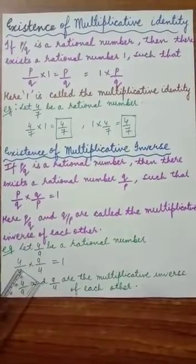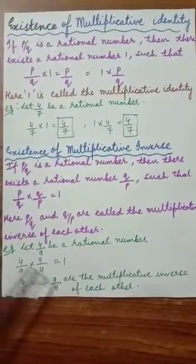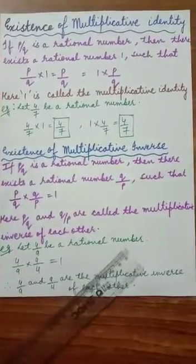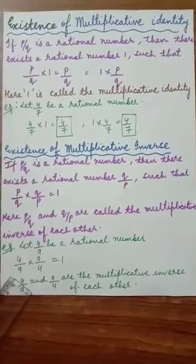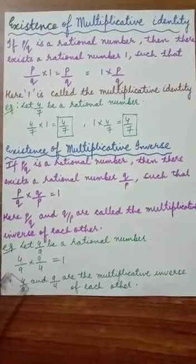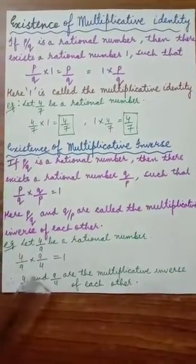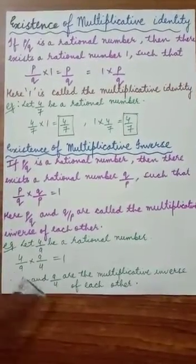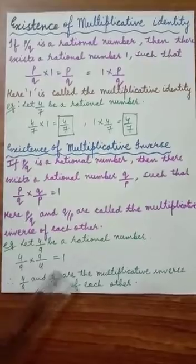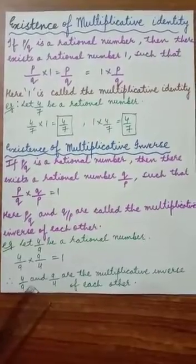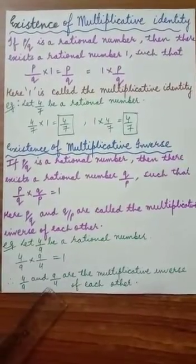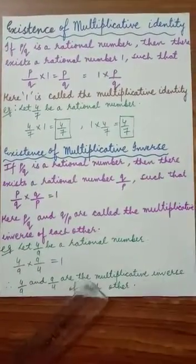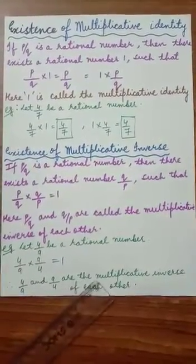Now look at the example. Let 4 by 9 be a rational number. The reciprocal of 4 by 9 is 9 by 4. So 4 by 9 into 9 by 4 is 1. Therefore, 4 by 9 and 9 by 4 are the multiplicative inverse of each other.